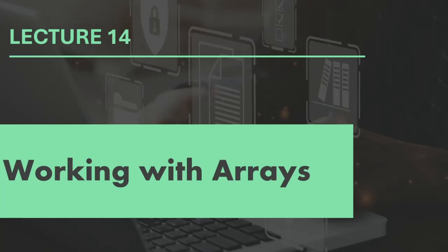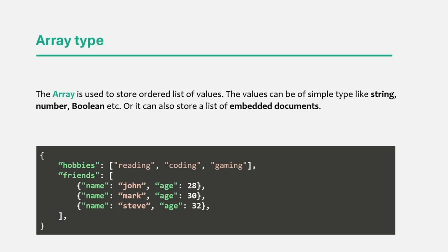In the last lecture, we discussed different data types supported in BSON data format and in MongoDB. One of the types we talked about briefly is the array type. The array type in MongoDB is used to store a list of items. Items can be simple values like a list of countries or colors, or it can also be a list of objects like list of products, list of users, etc.